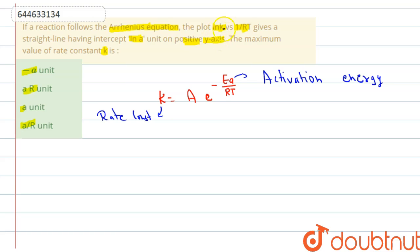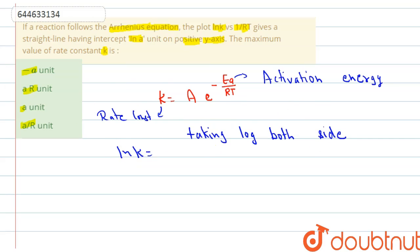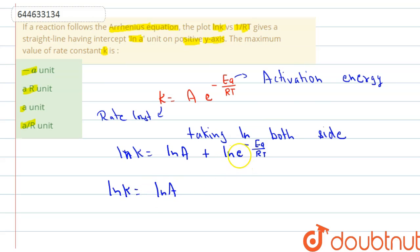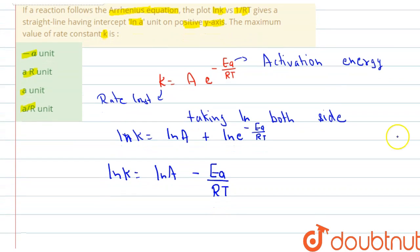The graph is between lnk and 1/RT, so we will take ln of both sides. Taking ln both sides: lnk equals lnA plus ln(e to the power minus Ea/RT). This simplifies to lnk equals lnA minus Ea divided by RT. This is our linearized form, where the x-axis is 1/RT.